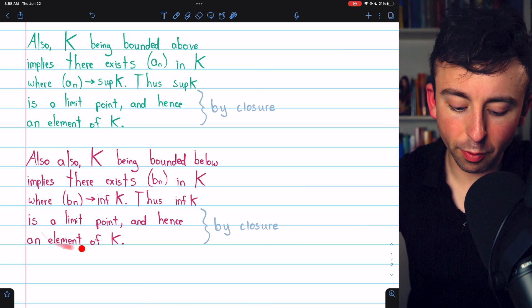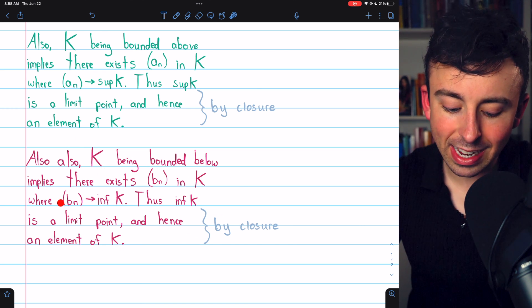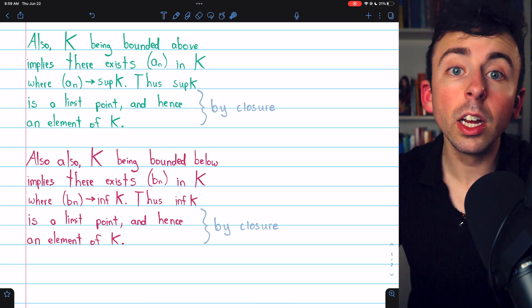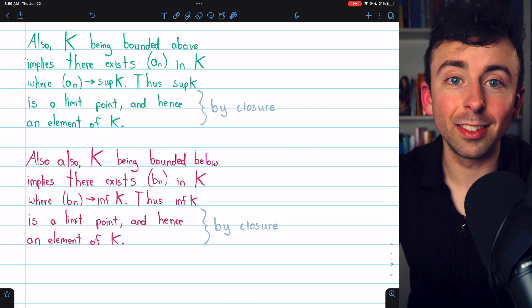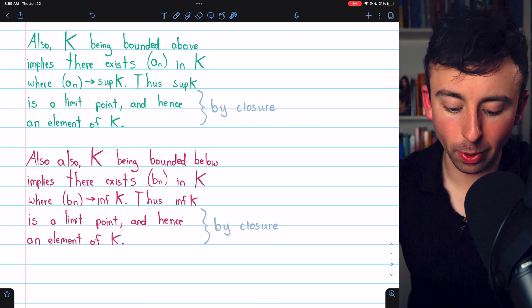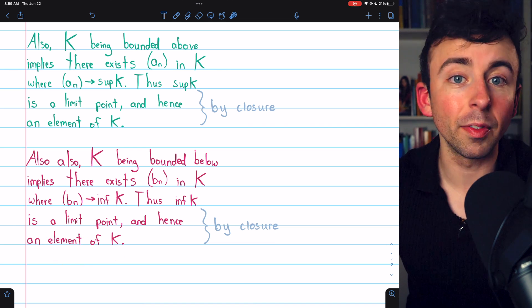And then, similar thing for the infimum. K being bounded below means there's a sequence in K converging to the infimum, which means the infimum is a limit point, but then the set is closed, so it contains its limit points, so the infimum not only exists, but is also an element of K.